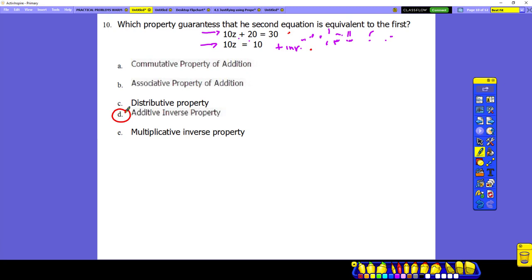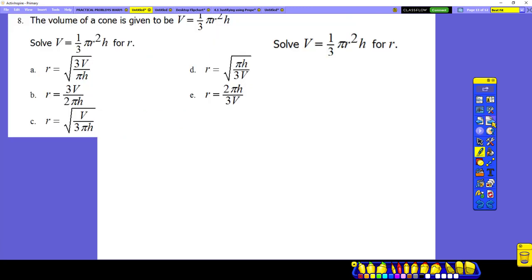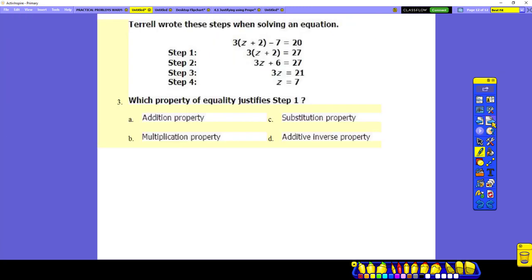Tomorrow. It should be today. But then I decided to give you more practice. And finally, number three. How do I get step one from the given? What should we do to get step one? Add seven. Okay. Add seven. But I hope nobody chose A.